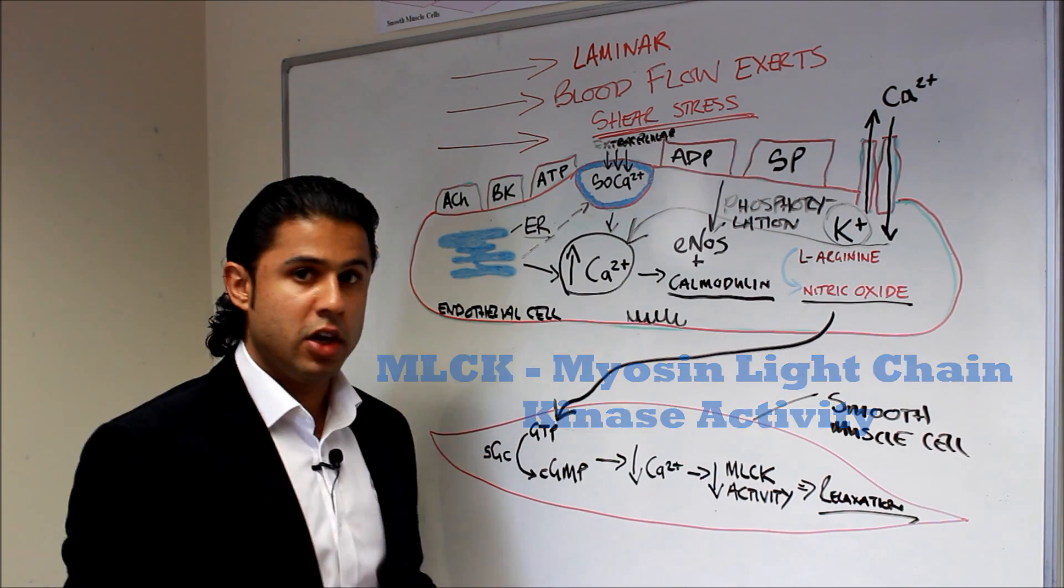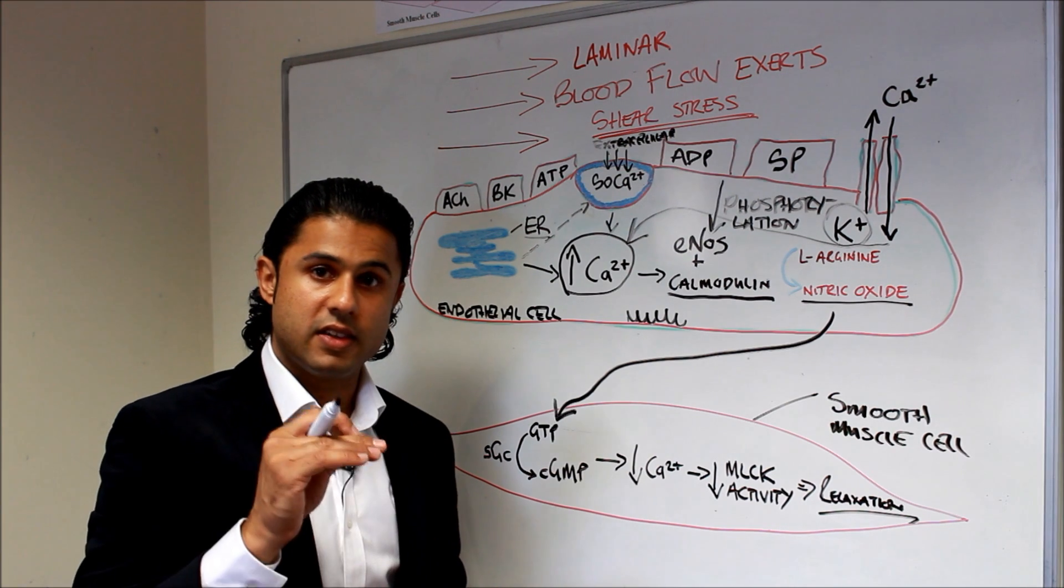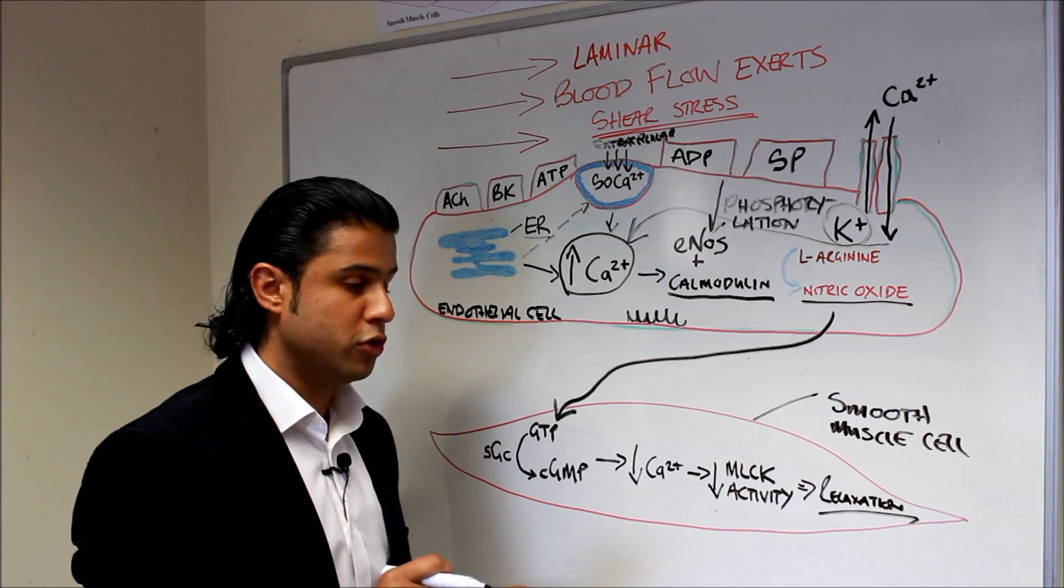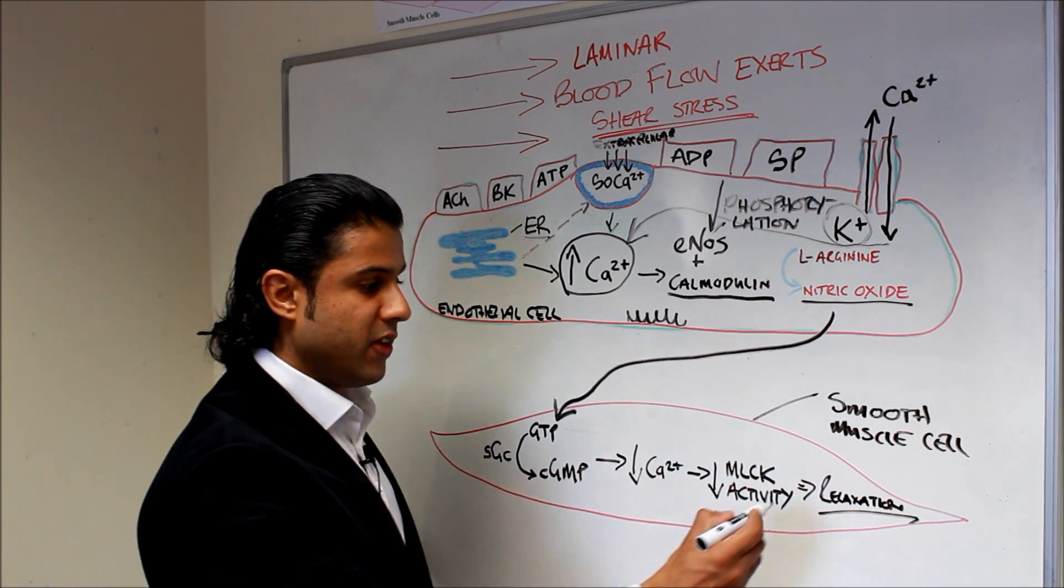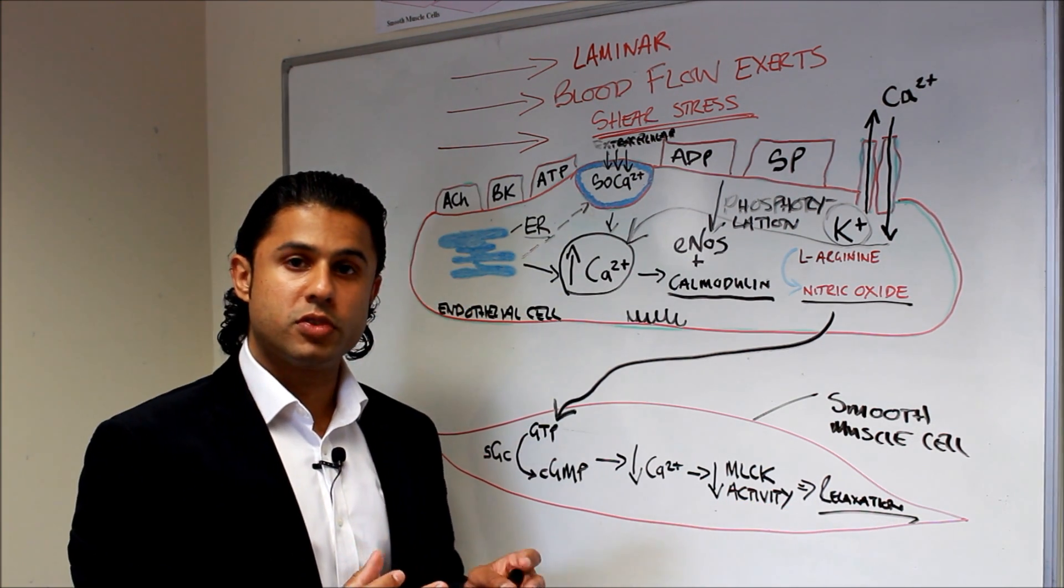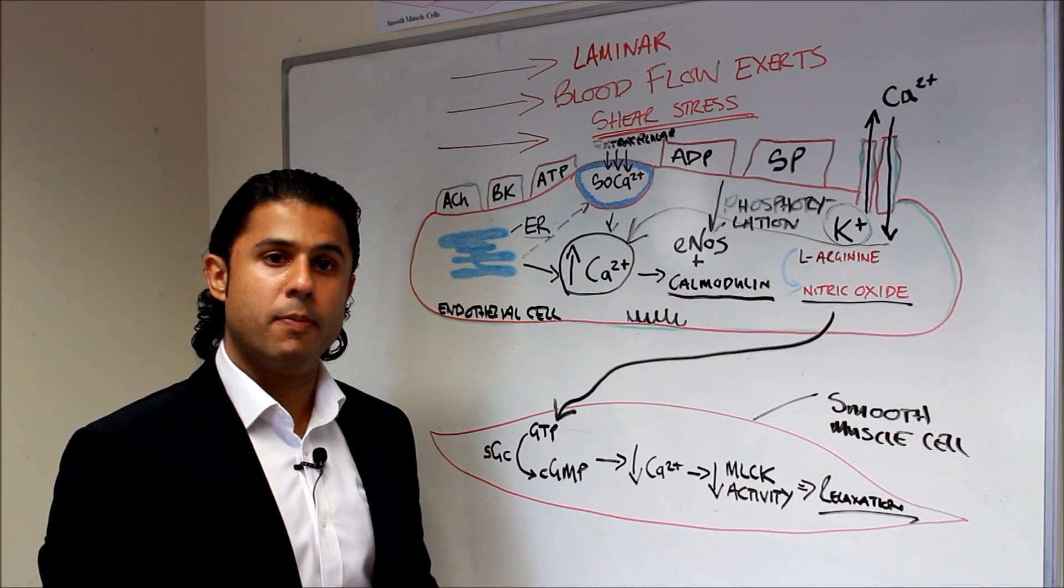So MLCK refers to myosin light chain kinase and that is reduced. The activity of that is reduced, you cannot get the actin and myosin cross-bridge formation, and then you get relaxation of the smooth muscle cells and you get vasodilation and you have an increase in blood flow.